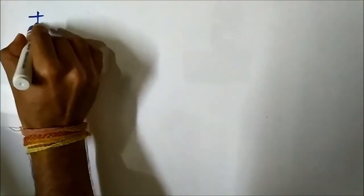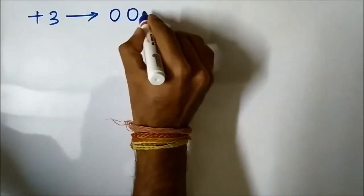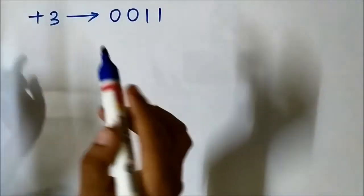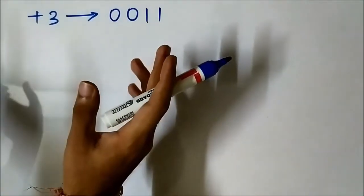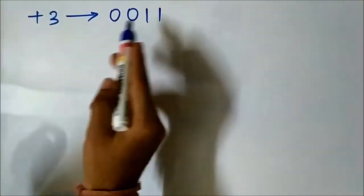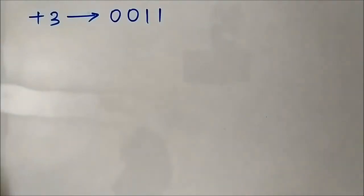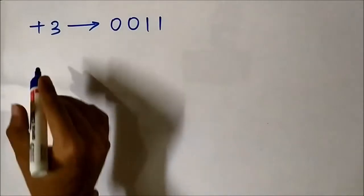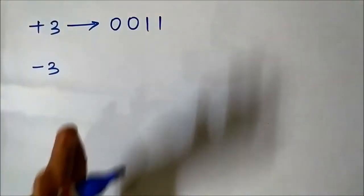To clearly understand how the same number is represented in different ways, let's take the same example from my previous two videos. We start with the number +3. The positive number +3 is represented in 4-bit format as 0011. This same representation applies in sign magnitude, 1s complement, and also in 2s complement. It is the negative number -3 that will have a different representation.